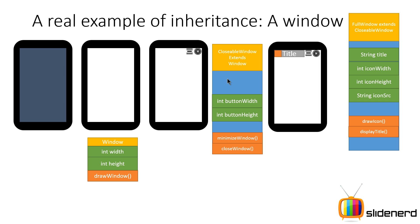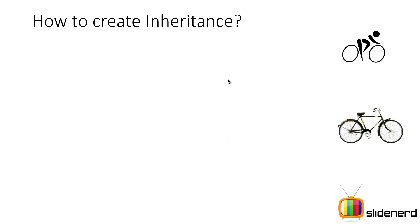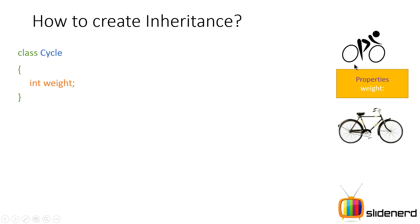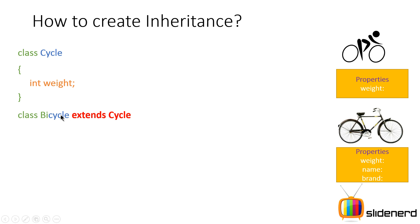Let's see how you create inheritance in Java. There's a class Cycle that has a property int weight. Then there is the class Bicycle, where you use the keyword extends — which means you cannot use this word for anything else other than performing inheritance. So you write: class Bicycle extends Cycle.